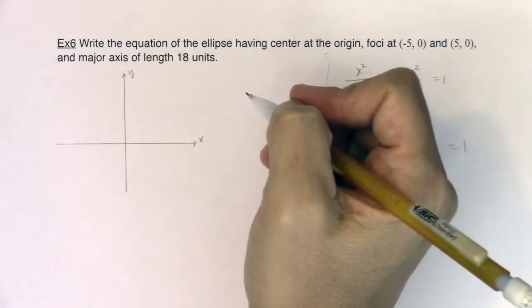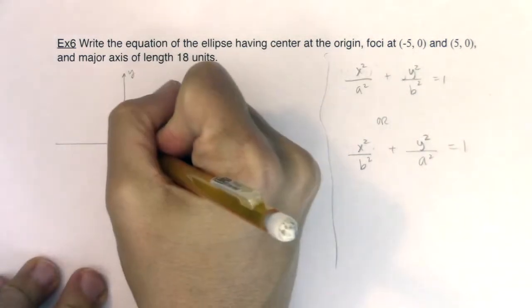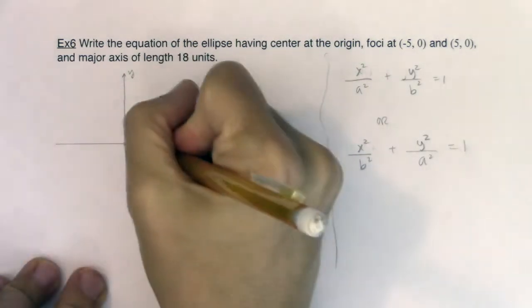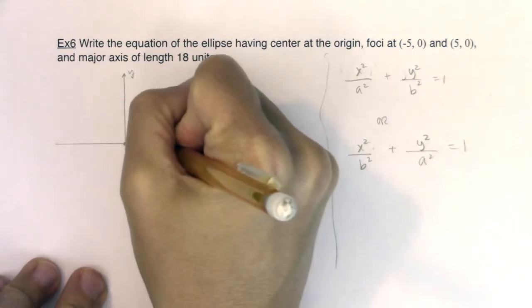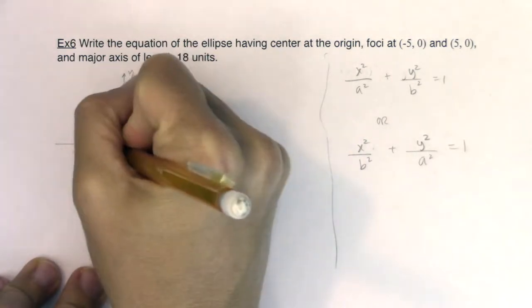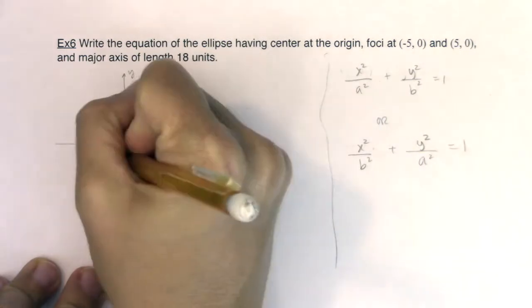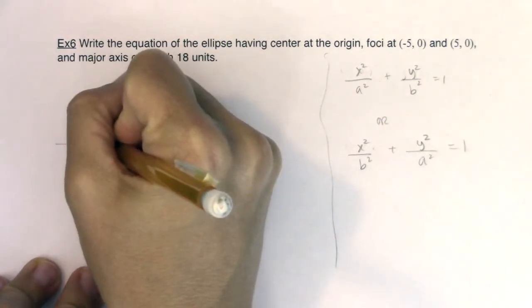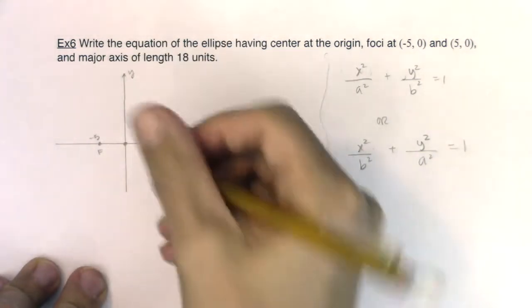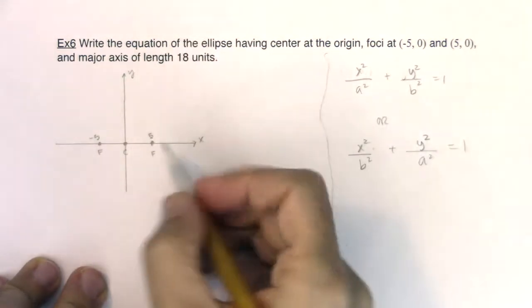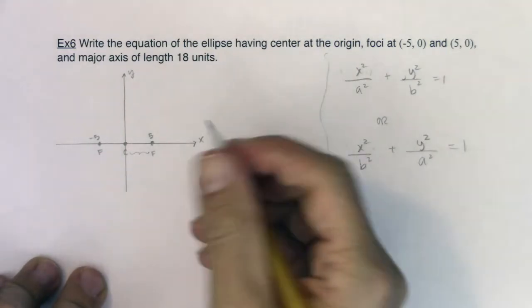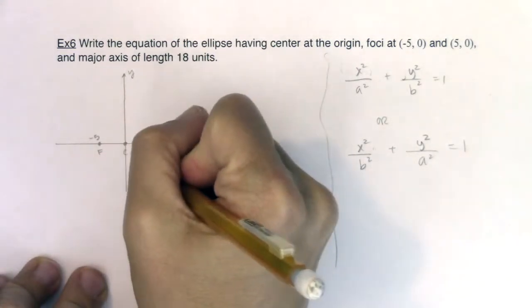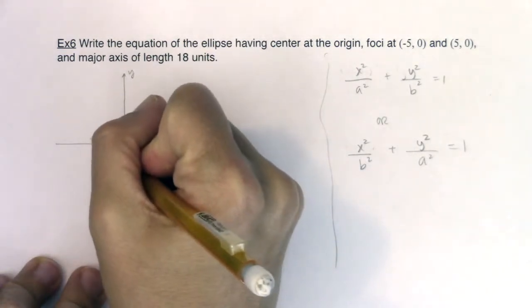So I have a center here at the origin. And I have a foci at (5, 0). So I'll put a focus goes here and I have another foci at (-5, 0). Now this is my center. I know that the distance from my center to my foci is c. c is always the distance from your center to your foci.